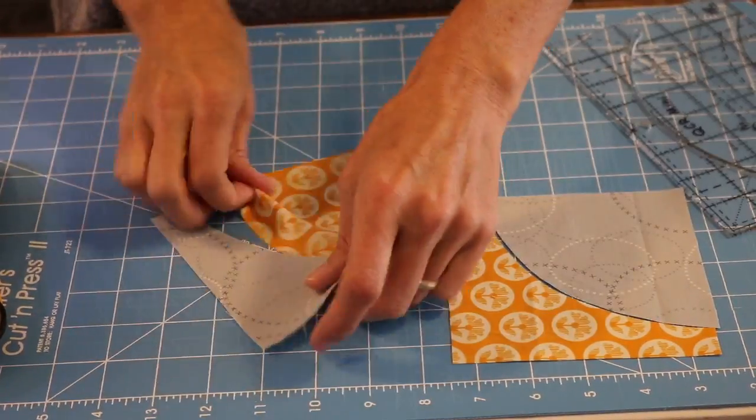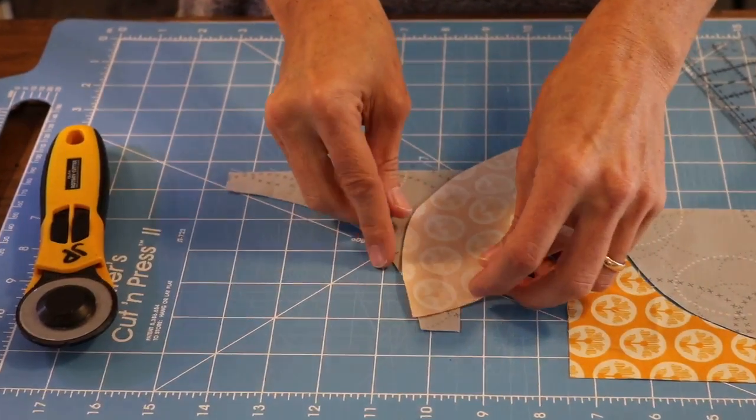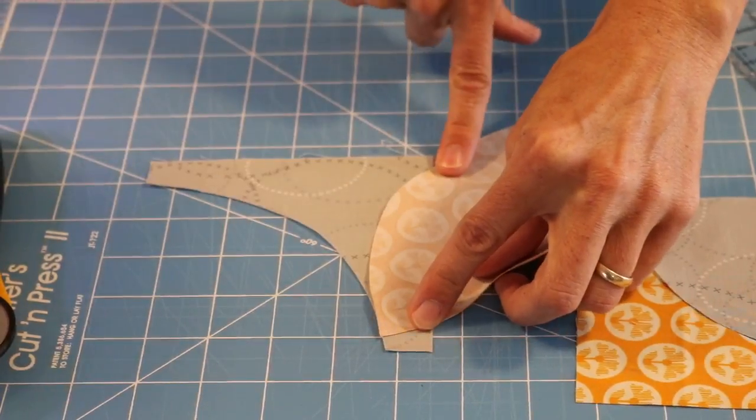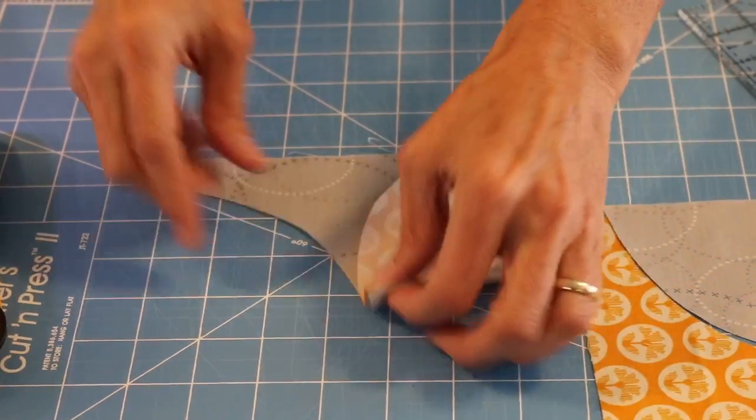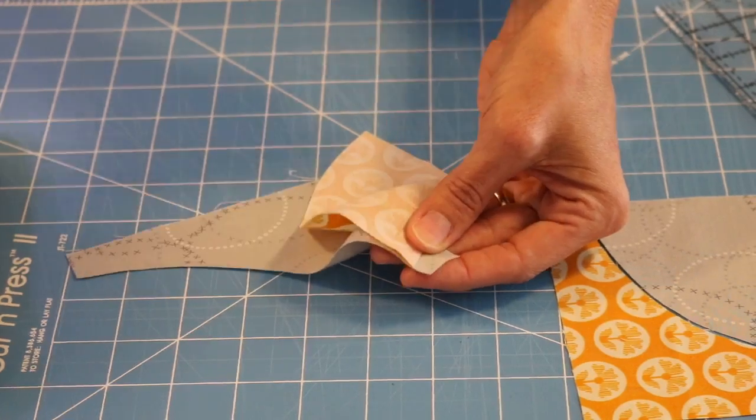So I'll go ahead and sew these two together, right sides together, convex on top and concave on the bottom, and that bottom piece extending about a quarter of an inch.